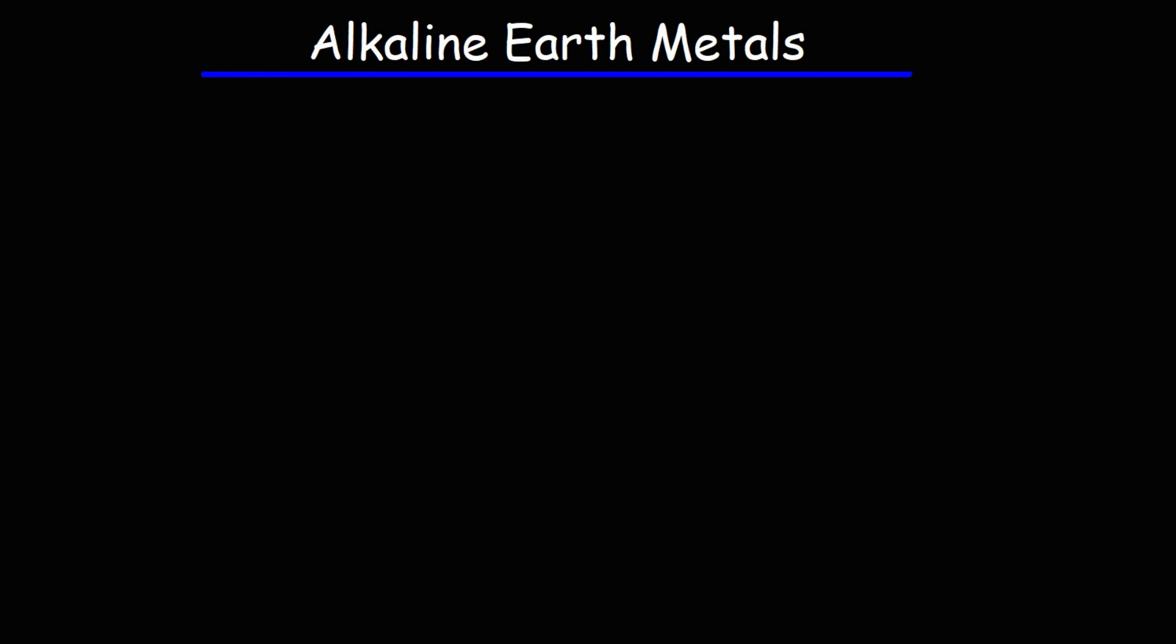In this lesson we're going to talk about the alkaline earth metals. These metals are found in group two or the second column of the periodic table. They include elements like beryllium, magnesium, calcium, strontium, barium, and radium.